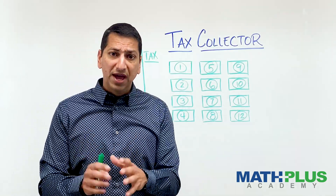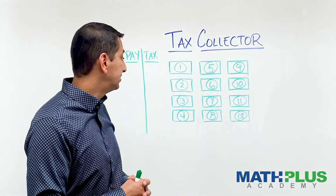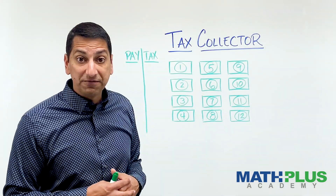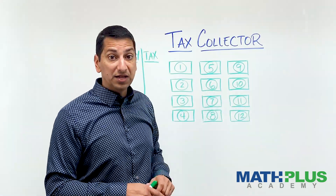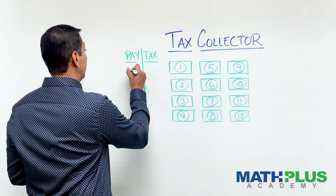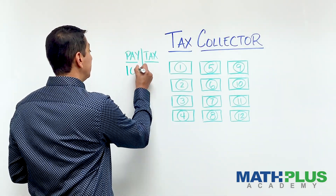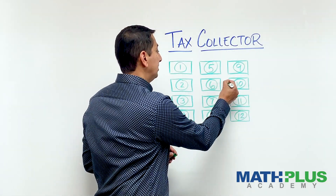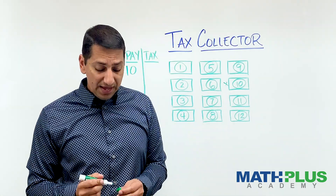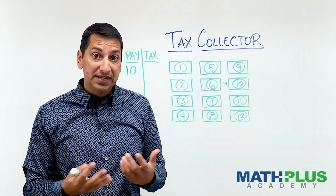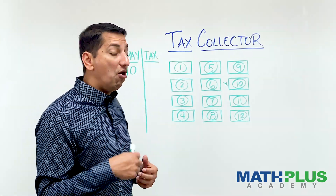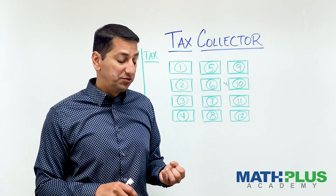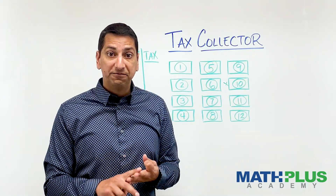Let me show you how it works. Let's say I choose for my first paycheck the $10 paycheck. Good news for me, I get $10. Now that paycheck is gone, and the tax collector is now going to collect tax on that — all the factors of the number 10, which would be 1, 2, and 5.